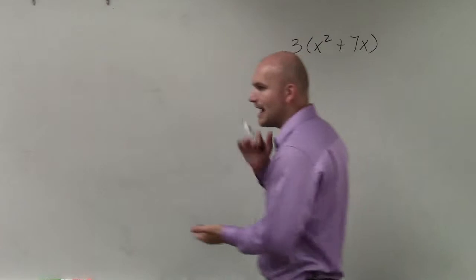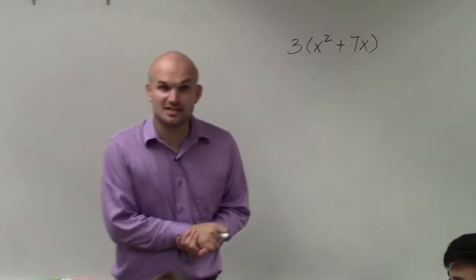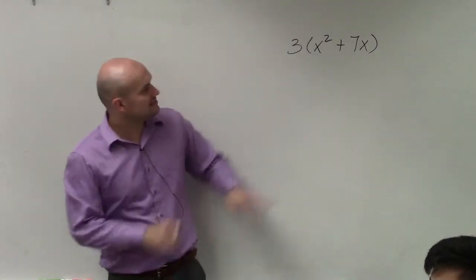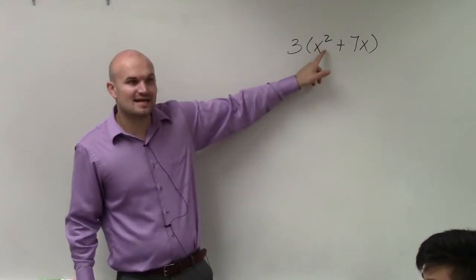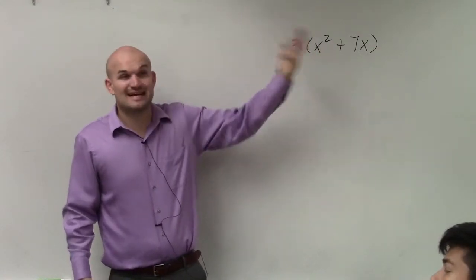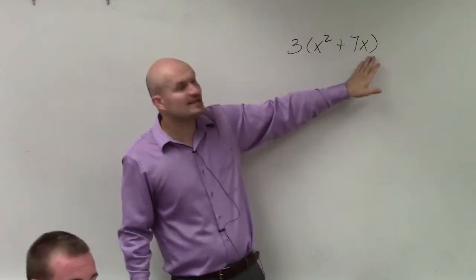So now the next one is, now we don't have addition. What we have in this case is, well, we have addition, but we can't combine these, right? Because that's x squared, so the variable factors of x squared is x and x, x times x. And then here we only have one x.